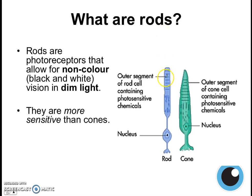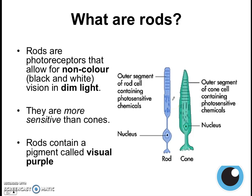In dim light, a small amount of light will be able to stimulate the rod, but it will not be able to stimulate the cone. So in very dim environments, it is our rods that are stimulated and that help us to see in the dark. Rods contain only one kind of pigment called visual purple, and visual purple is what allows us to see in the dark.